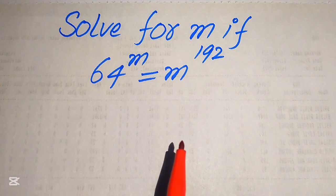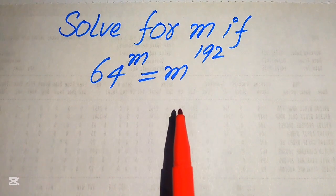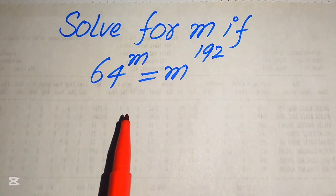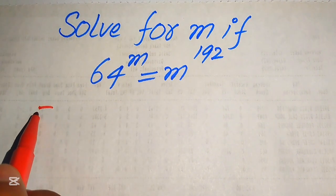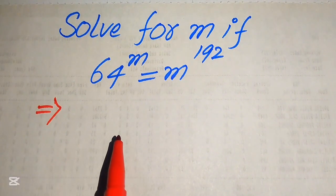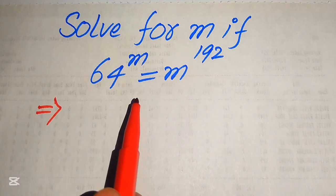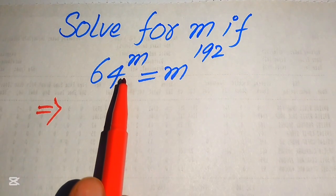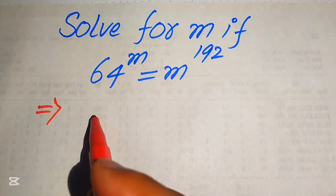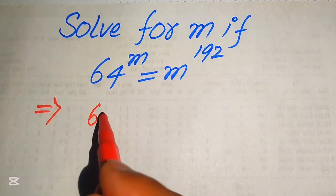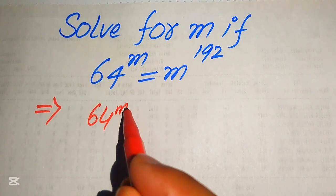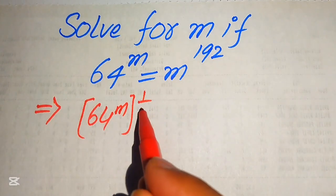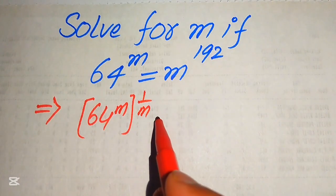Now, the very first thing we are going to do is move the variable terms to the right hand side and the constant terms to the left hand side. In order to move m to the right hand side, we take the mth root, or 1 over m power, on both sides.